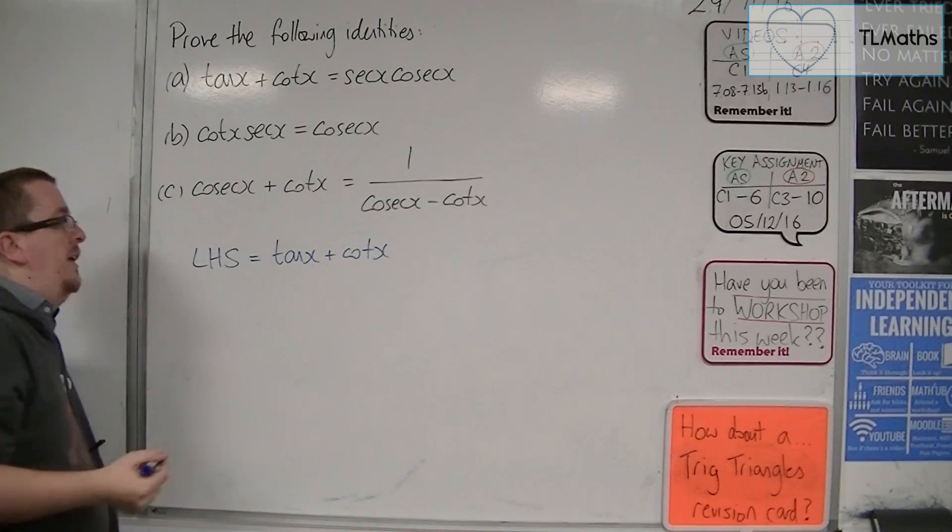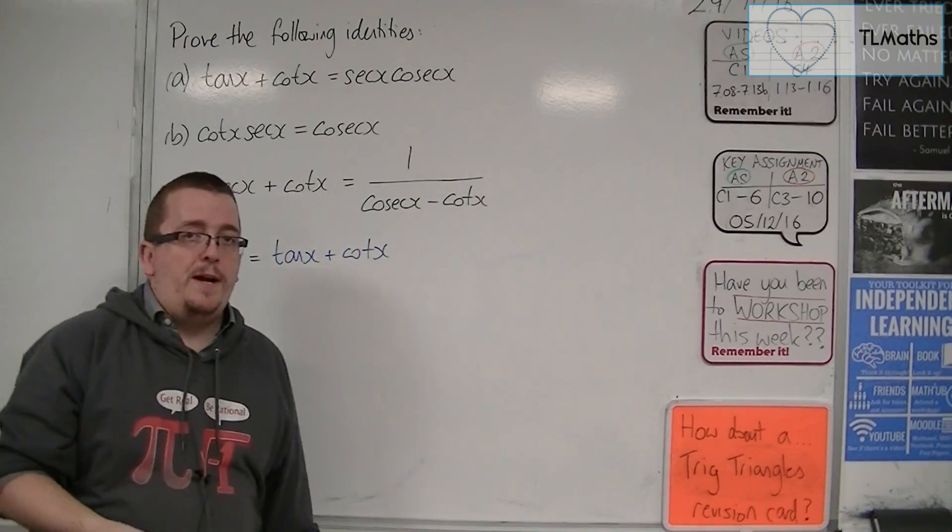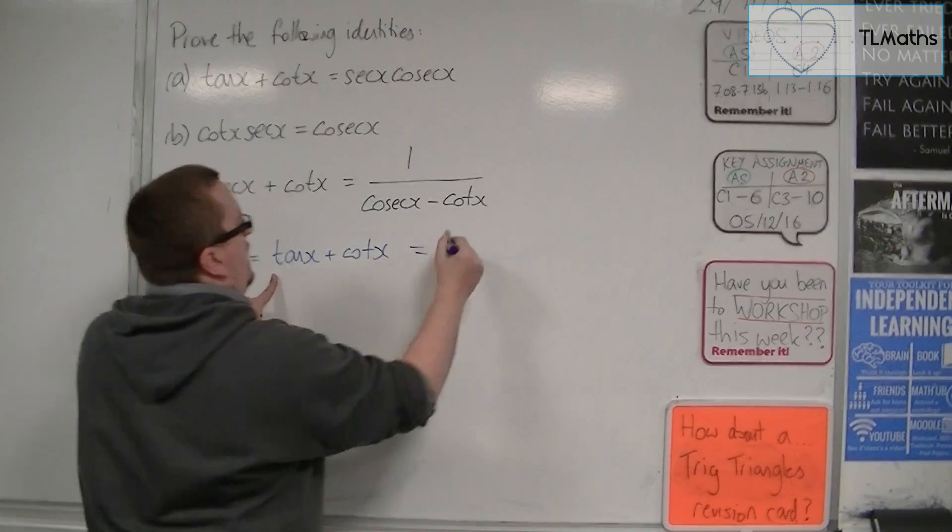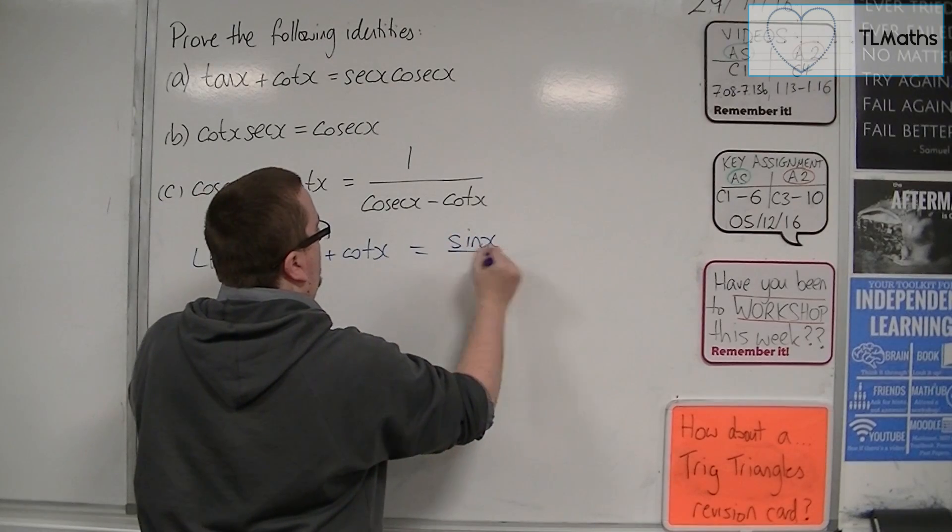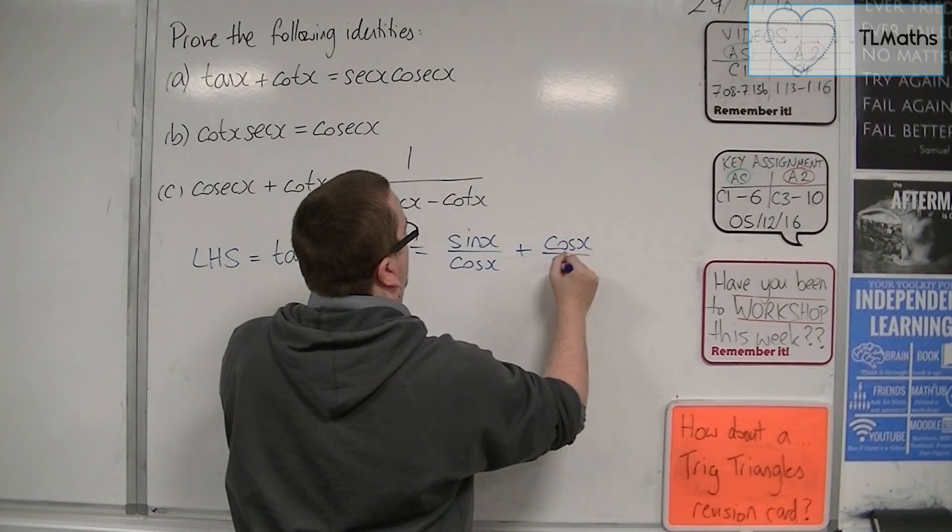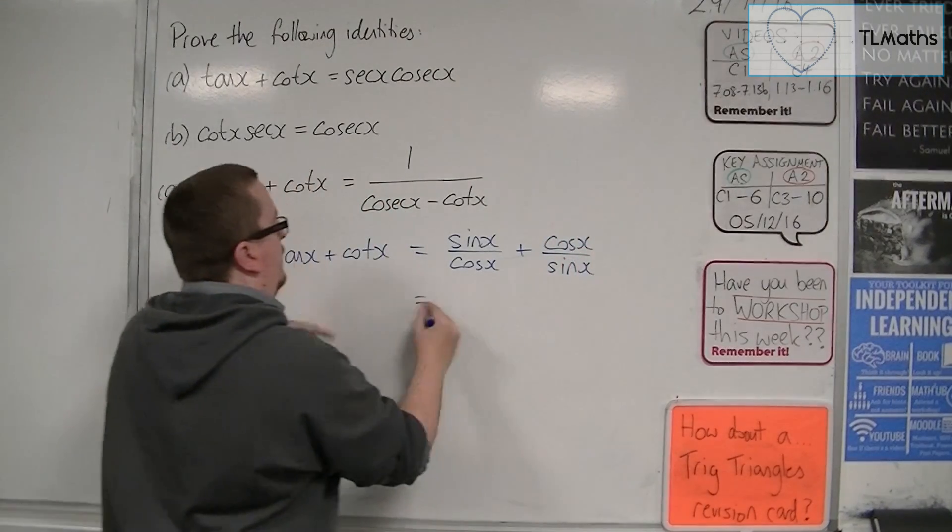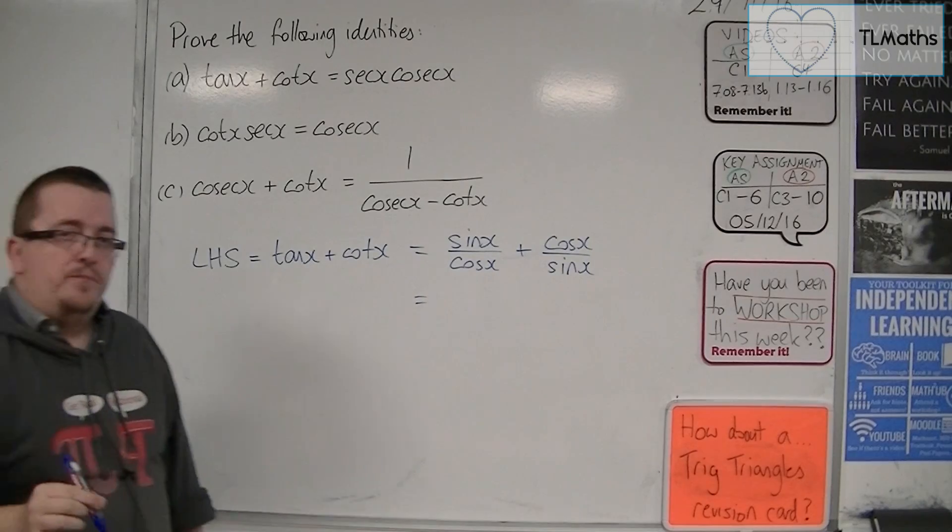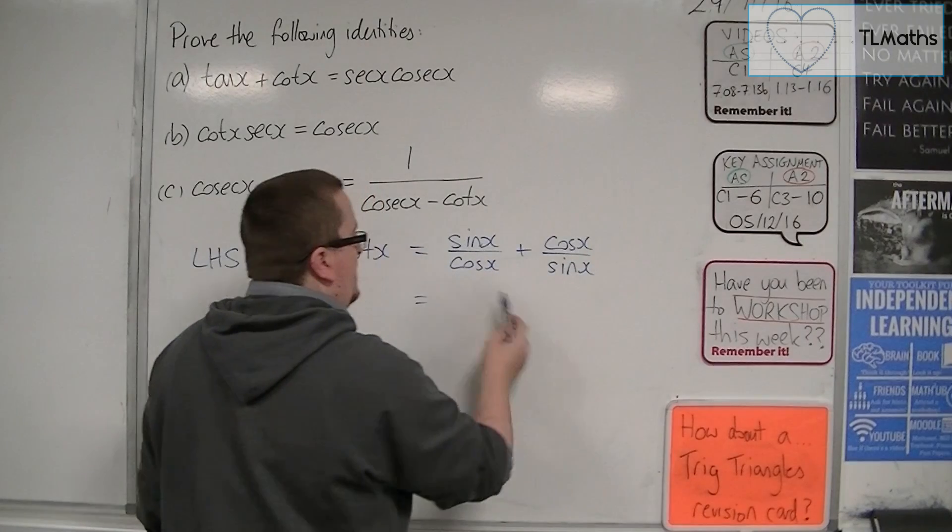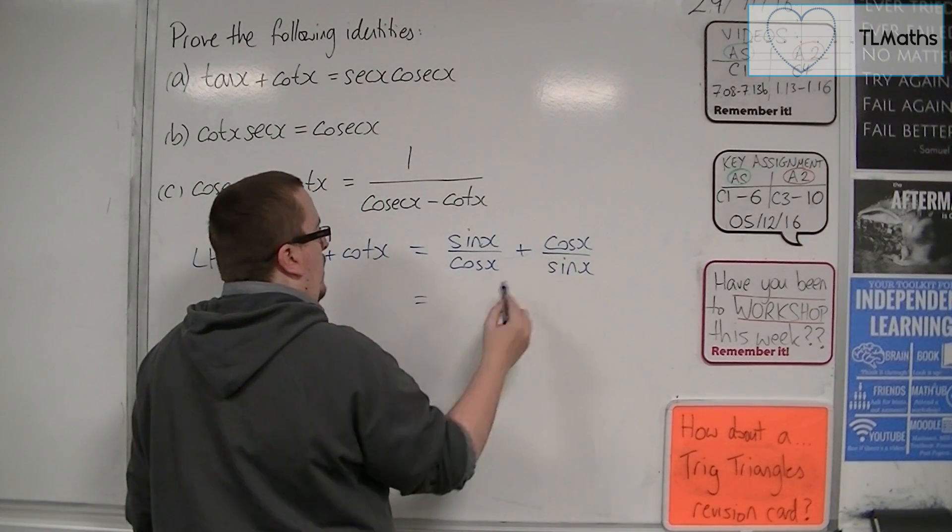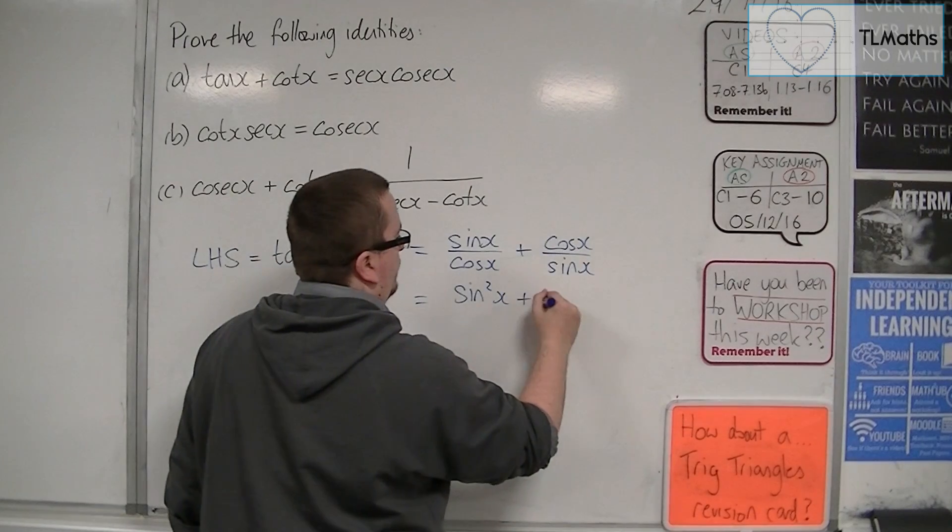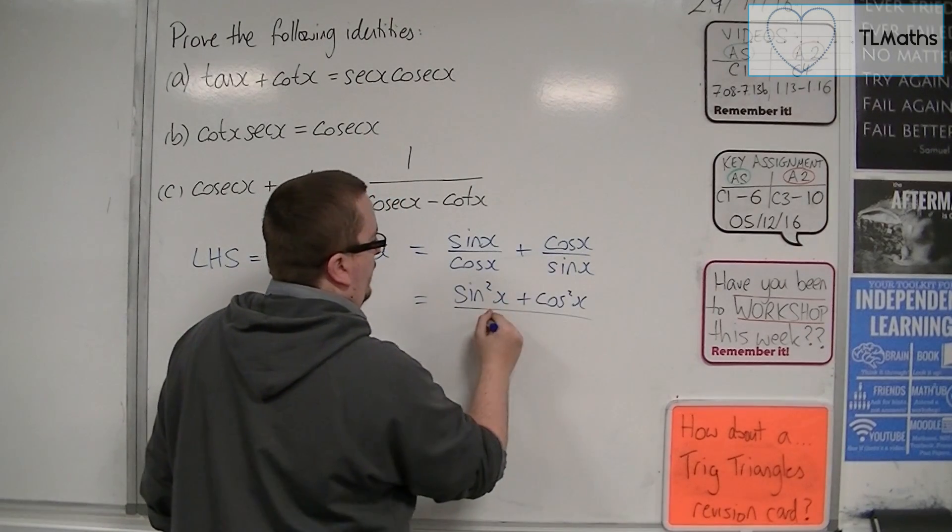Now, as it stands, there's nothing much I can do with that unless I turn them into sines and cosines. So tan is sine x over cos x, and cot is cos over sine. Now, at this stage, what I'm going to do is I'm going to use cross-multiplication to combine these two fractions together. So we're going to have sine squared plus cos squared over sine x cos x.